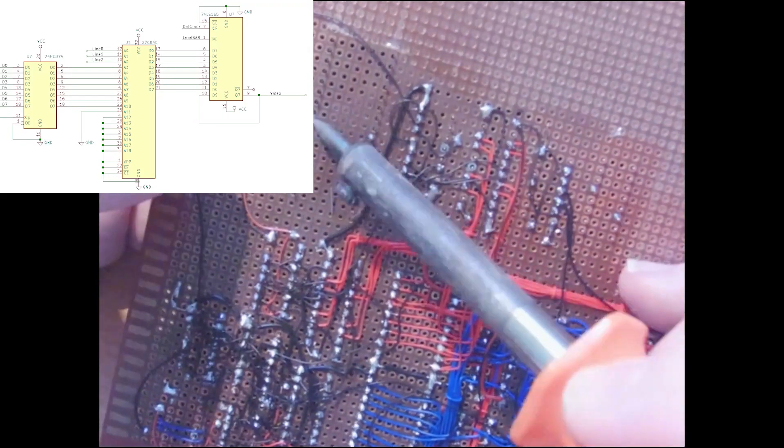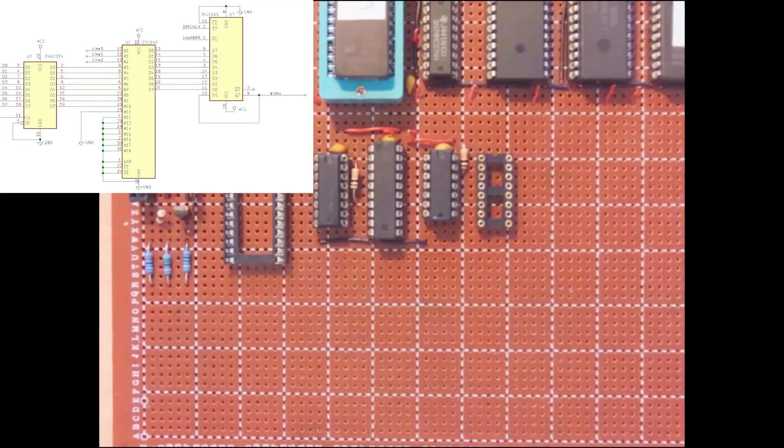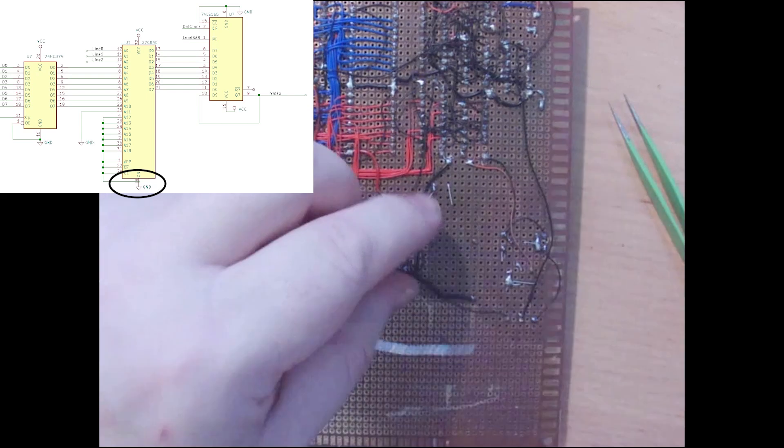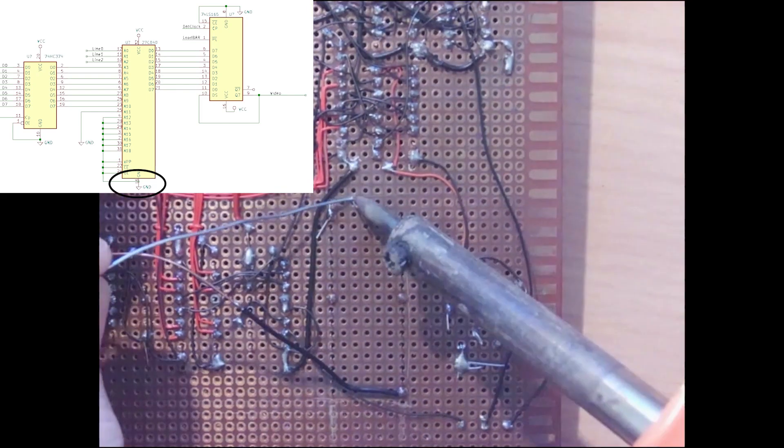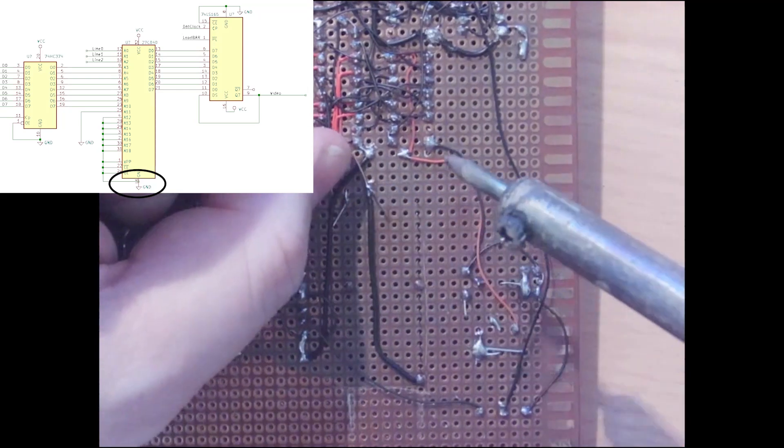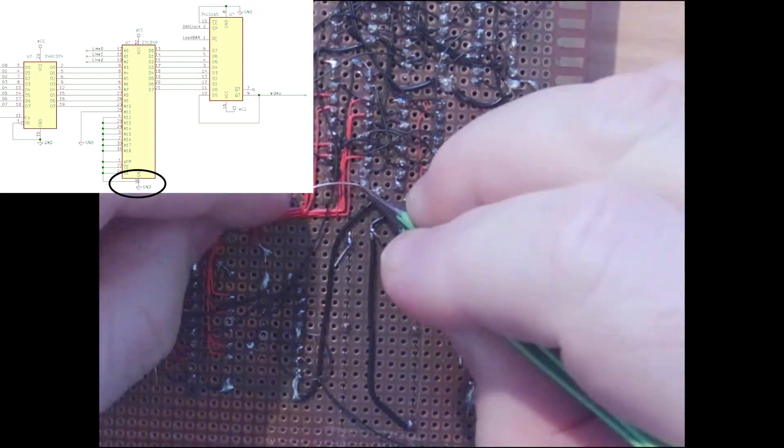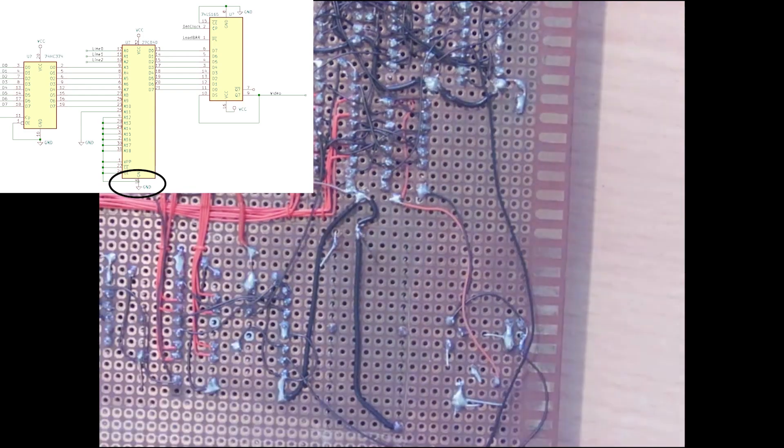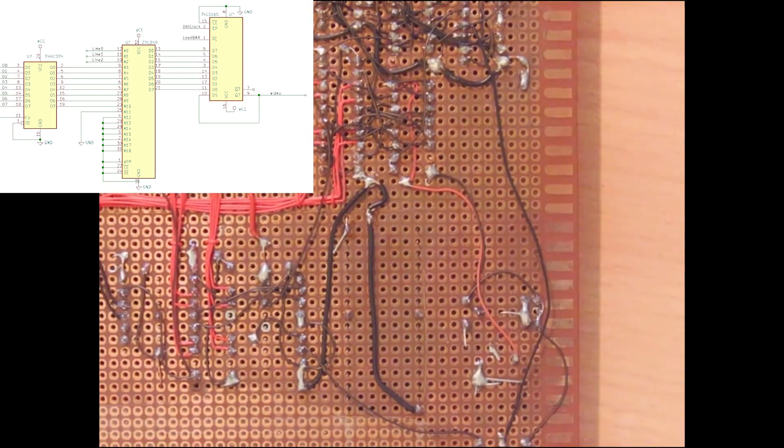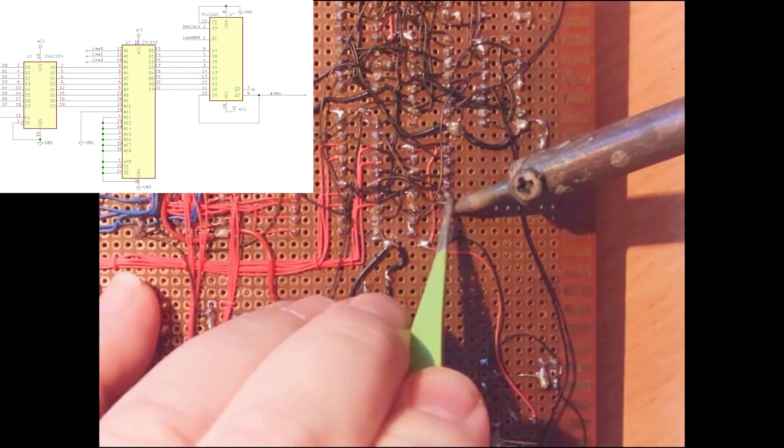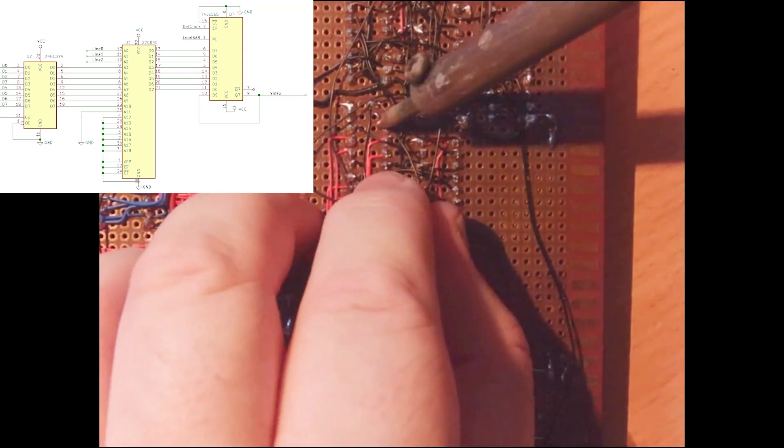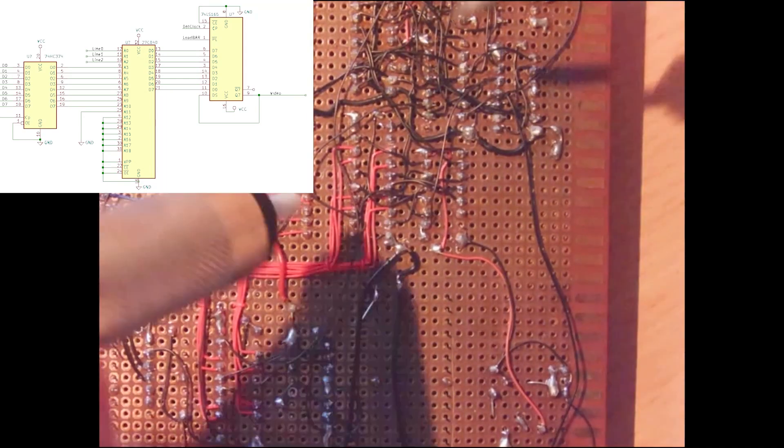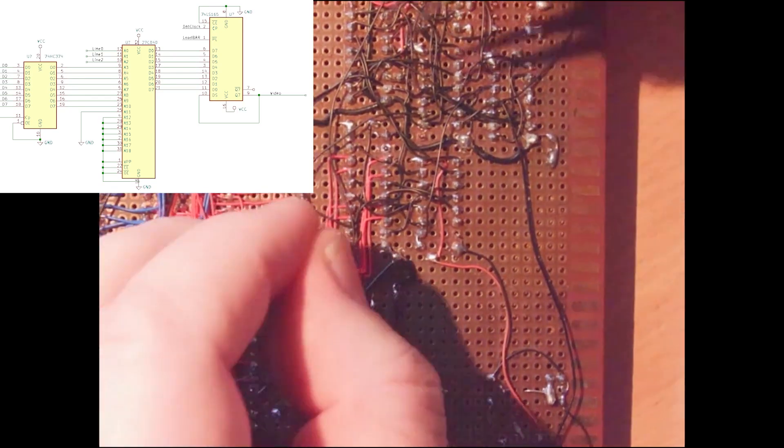First of all, I need to install the sockets for the character generator EEPROM and the multiplexer, which I'll discuss a bit later in the video. As usual, I need to hook up power and ground to these chips. I'm not sure why, but connecting power and ground always seems to take a long time. This is going to be a bit delicate. I need to disconnect the wires between the 74HC374 and the shift register, which is the 74HC165. And these are the signals I'm going to run through the character generator EEPROM.